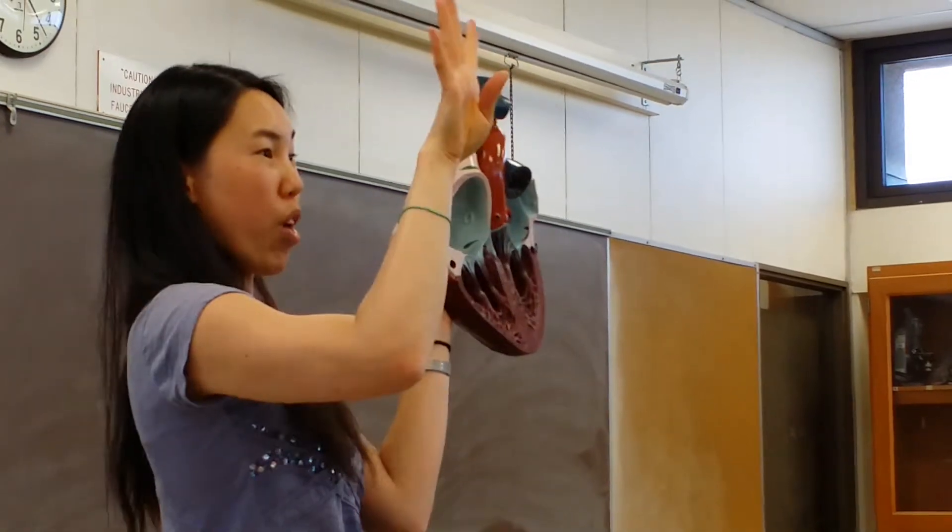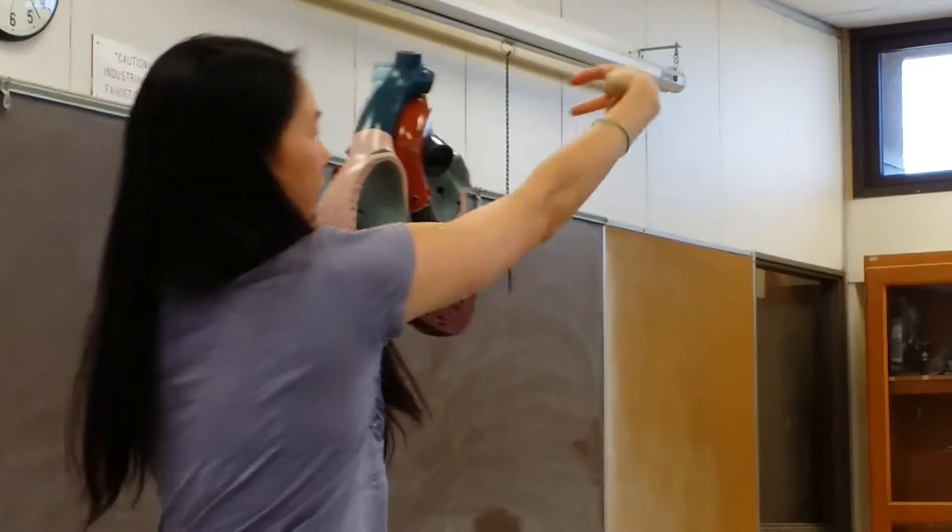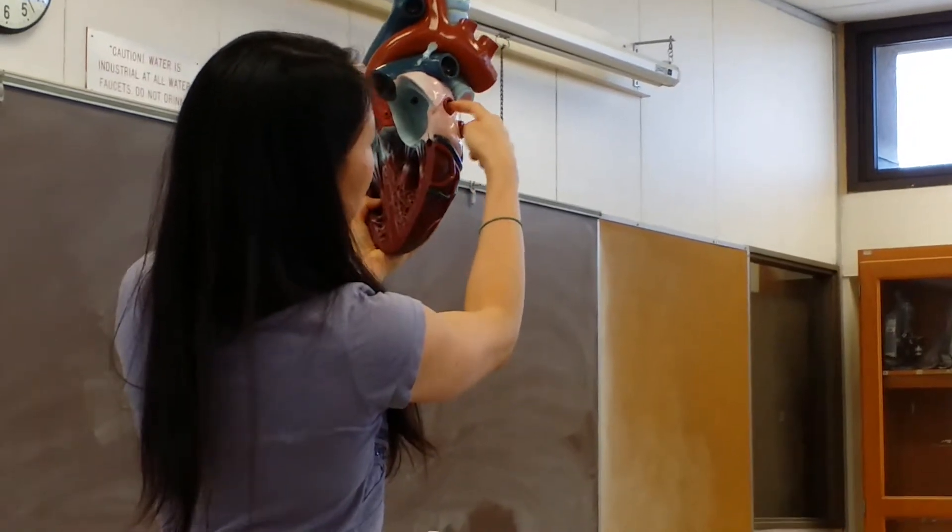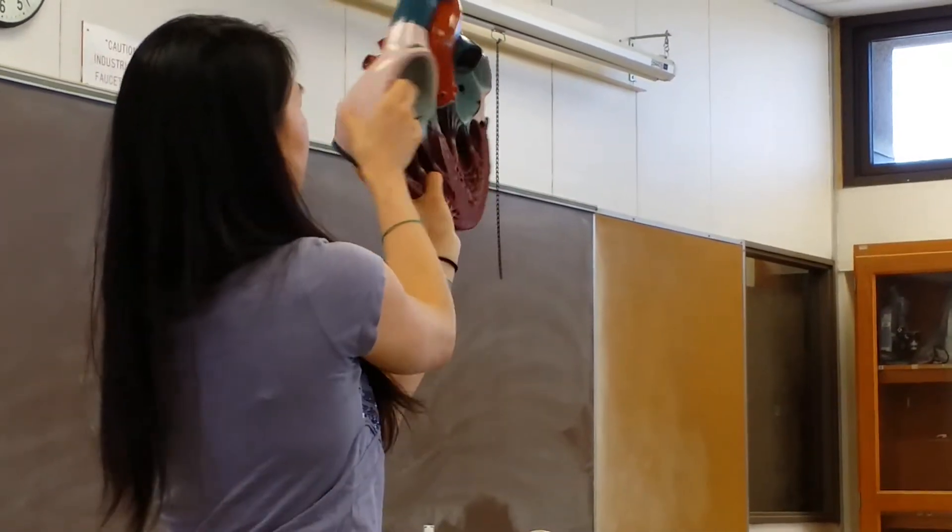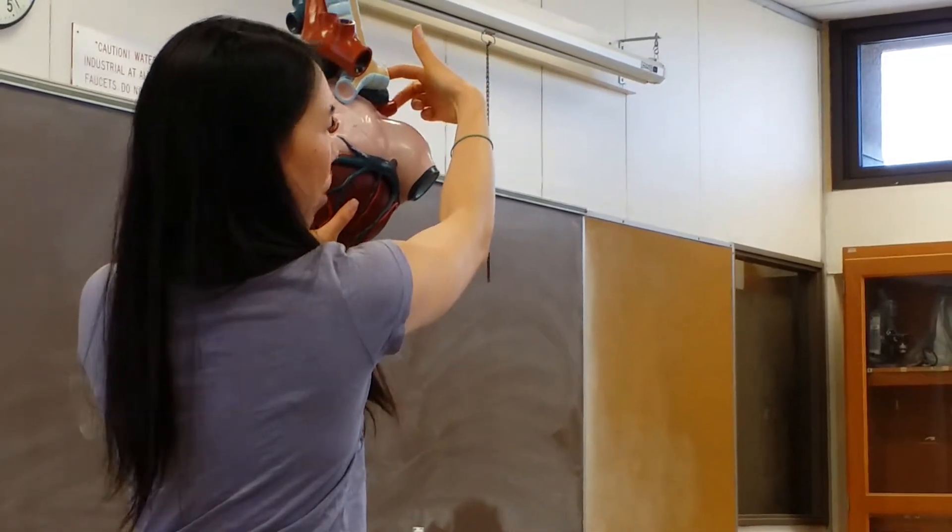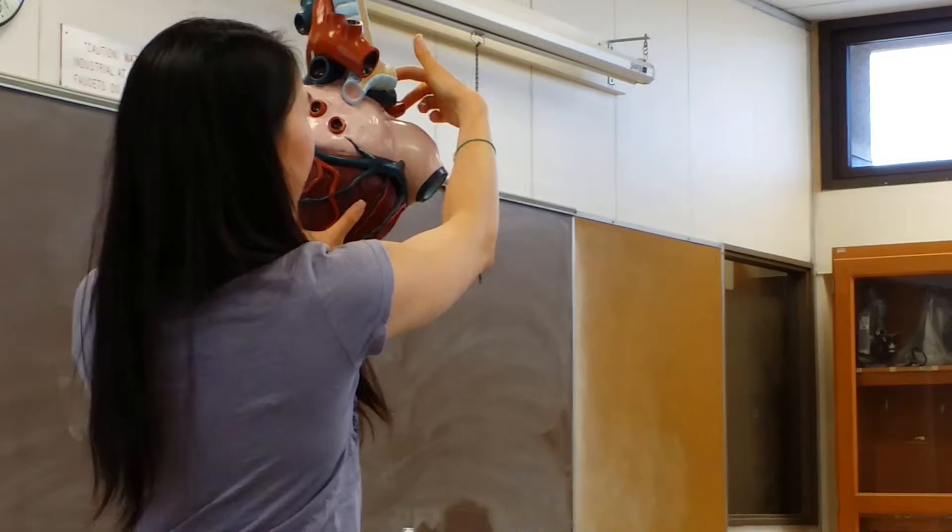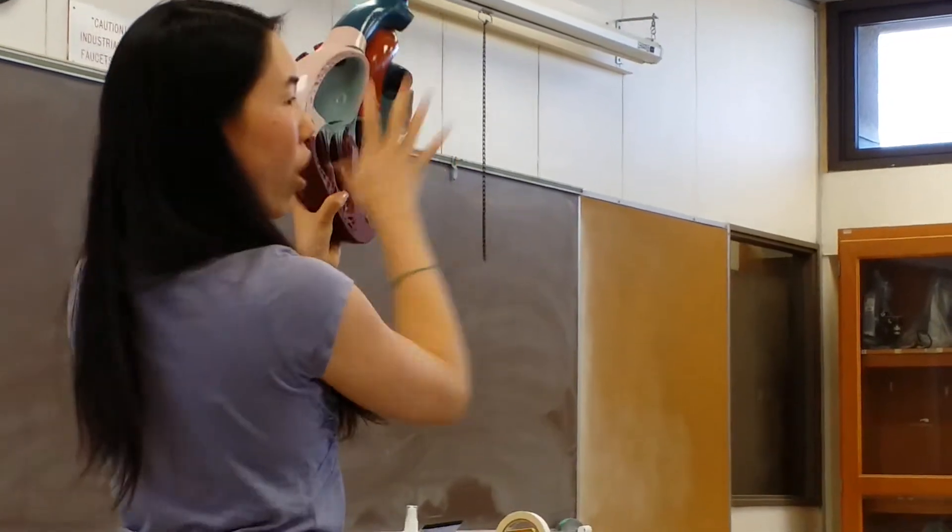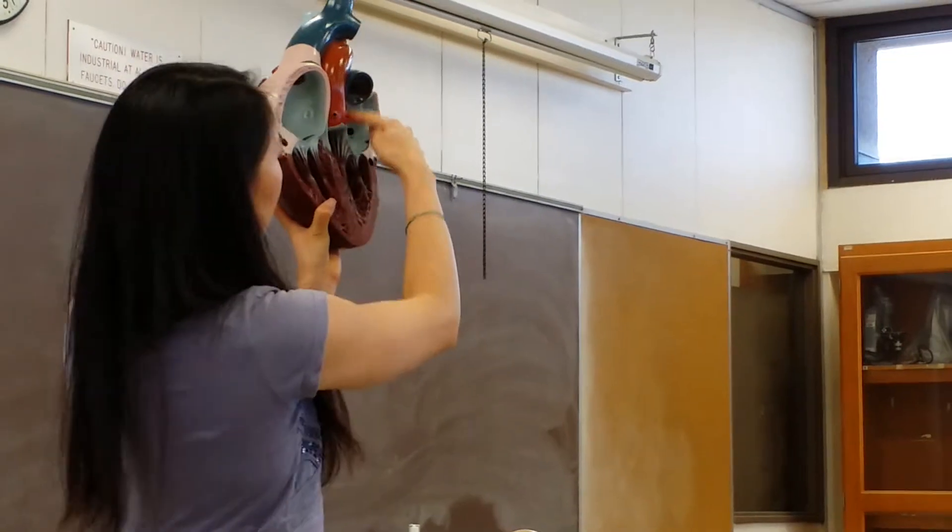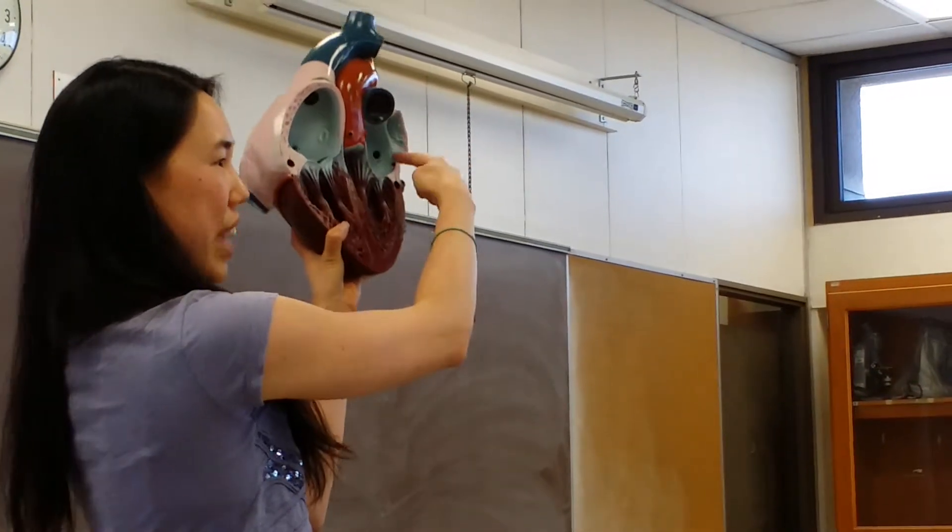Now we're going to return back to the heart through the pulmonary veins. There's actually four of them. There's two on the right side and two on the left side. If you look right here, these two red vessels coming in, those are pulmonary veins. And then if you look on the right side, these two vessels coming in in red are also pulmonary veins. And they both, all four of them, will enter the left atrium. So now we have nice oxygenated blood in the left atrium.